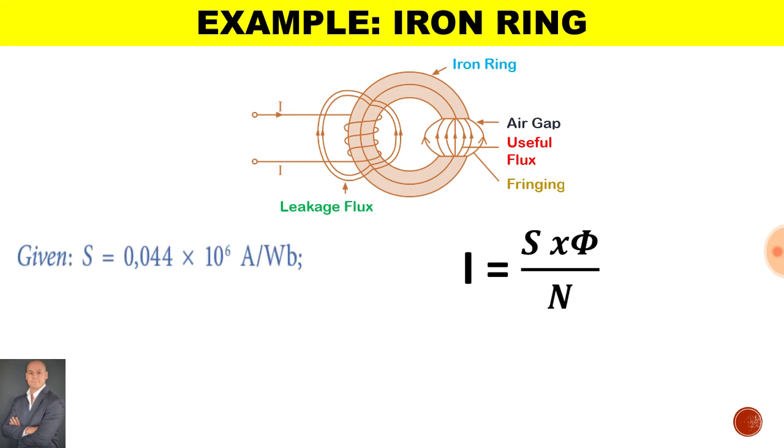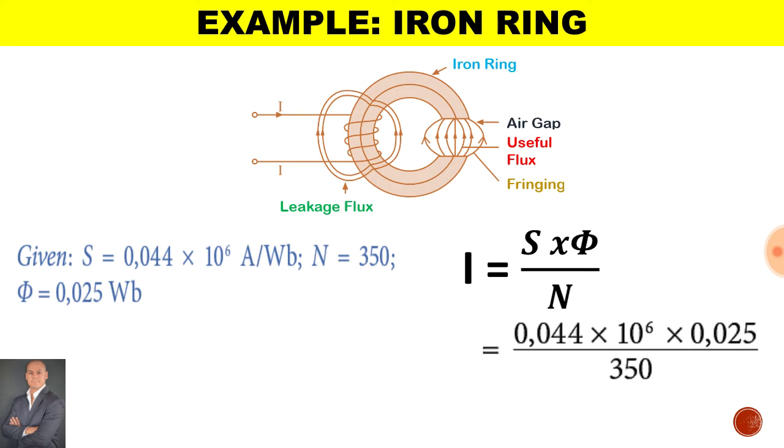Therefore, if we are given a reluctance of 0.044 times 10 to the power of 6 and 350 turns, with a magnetic flux of 0.025 Weber, if we substitute the values into our equation, we end up with a current flow of 3.143 amperes.